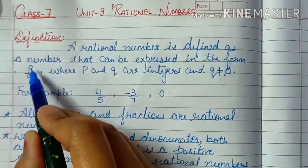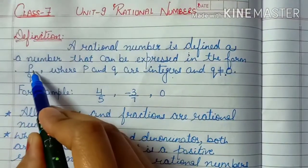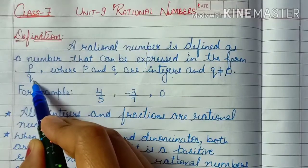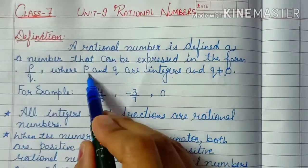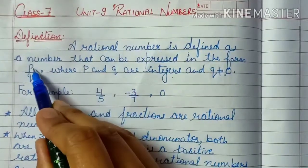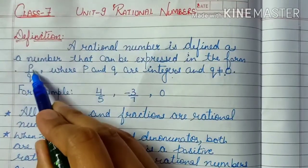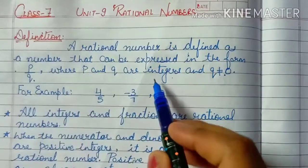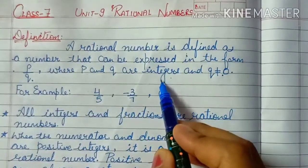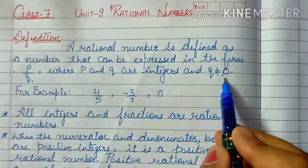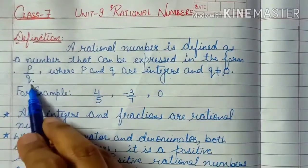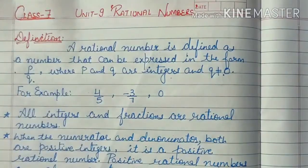The rational number is in the form of P upon Q, and P and Q must be integers. Both numerator and denominator must be integers, and one important thing: Q must not be 0. The denominator cannot be 0.